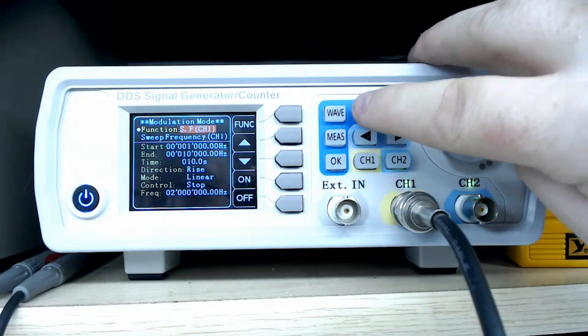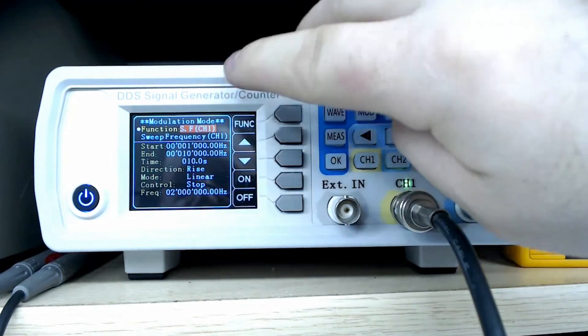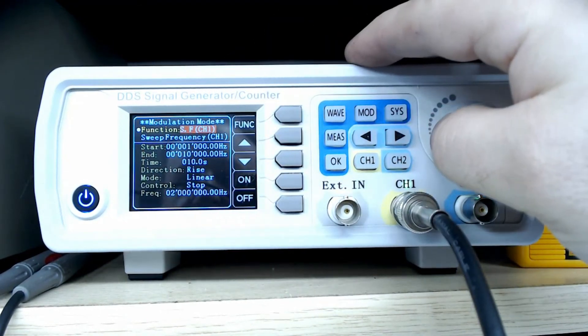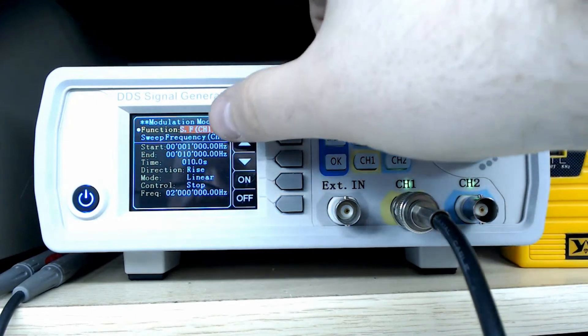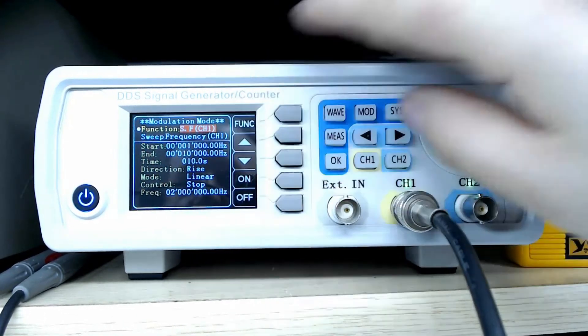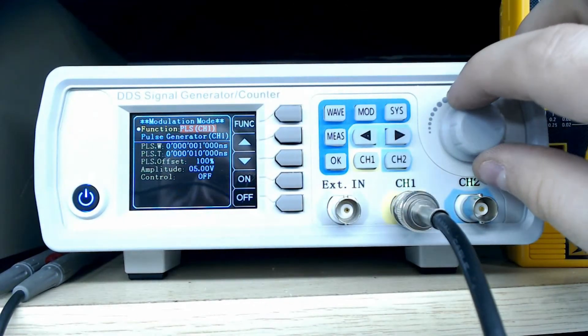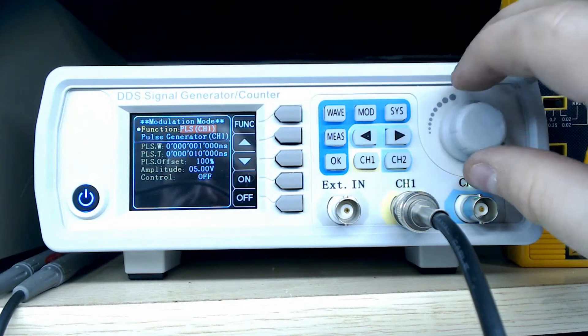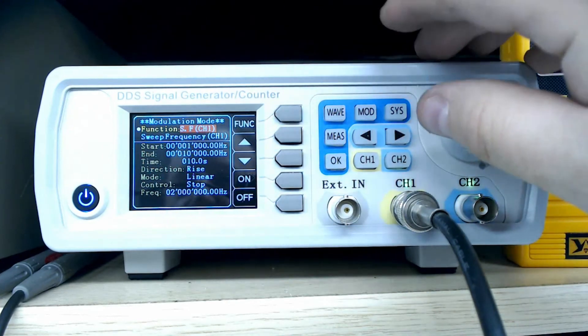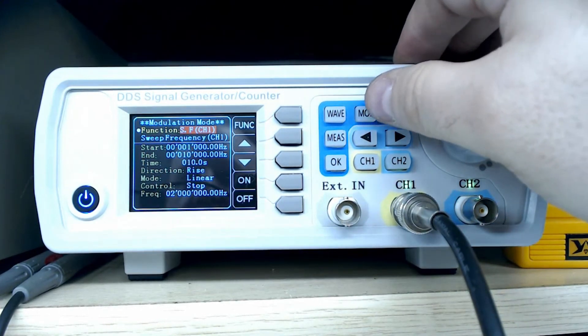I press the mod button right here and that gets me this other menu where we have some other functions. We have sweep frequency generator for channel one, I'm just turning the knob, channel two pulse generator. Just to give you an idea, I'll give you one of these modulation mode examples for sweep frequency.